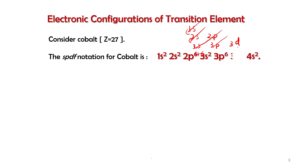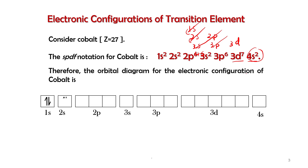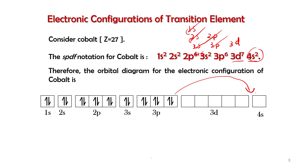After 2p⁶, we go to 3s², then 3p⁶, then 4s². The remaining electrons fill into 3d⁷. Between 4s and 3d, 4s has lower energy than 3d, so electrons must fill 4s first before 3d. We then draw the orbital diagram: fill 3p, then 4s, then the remaining electrons go into 3d.